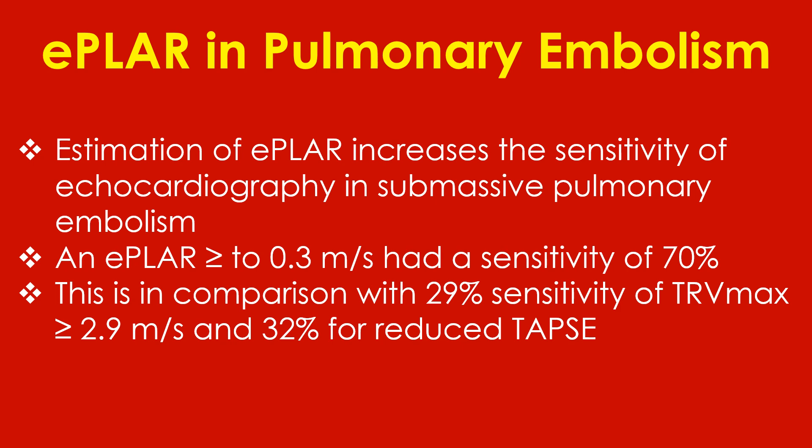An E-PLAR of more than or equal to 0.3 had a sensitivity of 70%, compared with 29% sensitivity for TRV max more than or equal to 2.9 m/s and 32% sensitivity for reduced TAPSE.